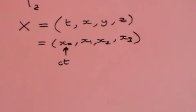C is a constant, universal, everyone measures it the same. And if we say that X0 equals CT, then all of those four components of the X vector are all measures of distance.